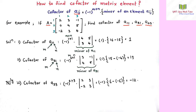a11 means the element belonging to the first row, first column, which is 2. a31 means the element at the third row, first column. a23 means the element at the second row, third column, which is 5. So we need to find the cofactors of these three elements.